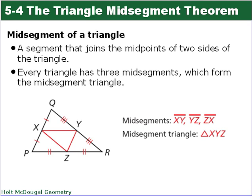So what is a midsegment of a triangle? It's a segment that joins the midpoints of two sides of the triangle. So in this picture we have QP and QR and you can see X is the midpoint of QP and Y is the midpoint of QR. So this line XY joins those two midpoints and that's a midsegment.